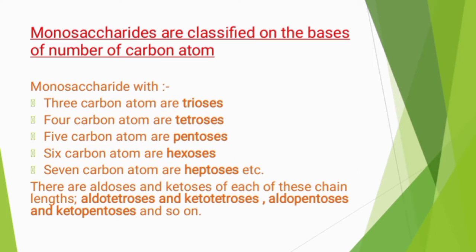Monosaccharides are also classified on the basis of the number of carbon atoms present: trioses, tetroses, pentoses, hexoses, heptoses, and so on. There are aldoses and ketoses of each of these carbon lengths — for example, aldotetrose and ketotetrose, aldopentose and ketopentose, and so on.